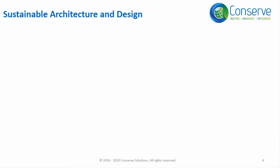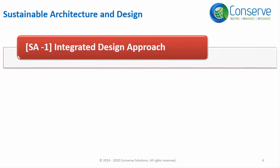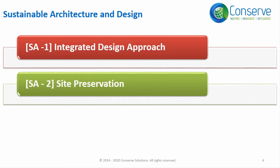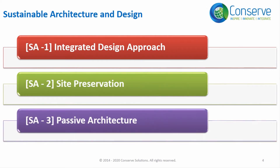There are three credits in Sustainable Architecture and Design. The first one is Integrated Design Approach, the second one is Site Preservation, and the third one is Passive Architecture. Let us first discuss about Passive Architecture.